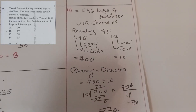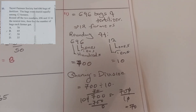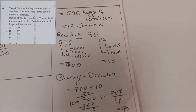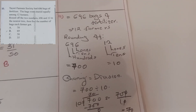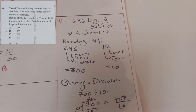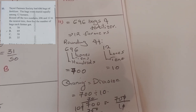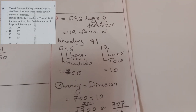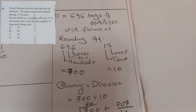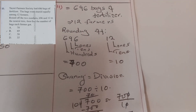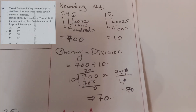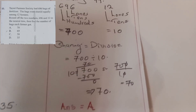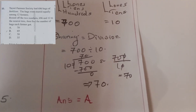Question eleven: a farmer's society had 696 bags of fertilizer, shared equally among 12 farmers. Round off 696 and 12 to the nearest tens, then find how many bags each farmer got. Rounding 696 gives 700, and rounding 12 gives 10. Then divide: 700 divided by 10 equals 70. The correct answer was A.